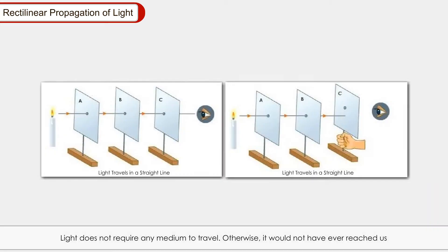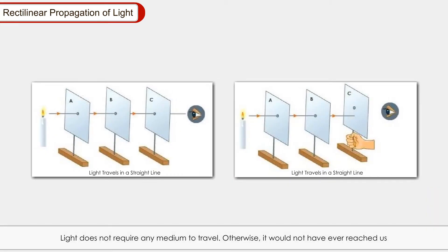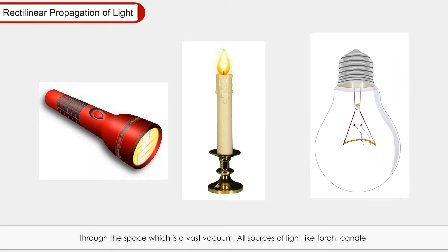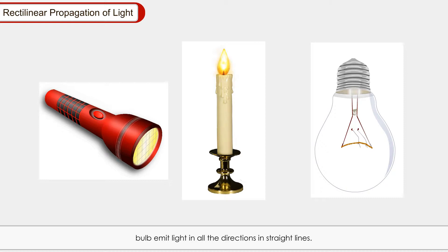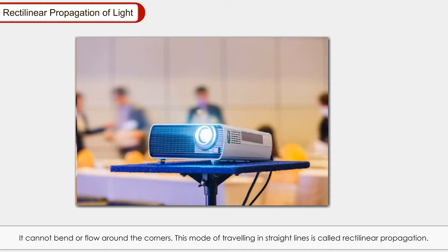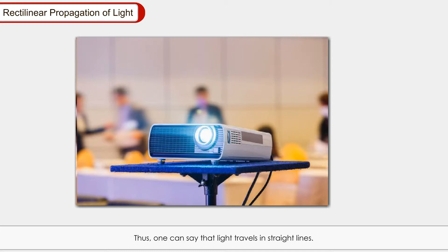Rectilinear propagation of light: Light does not require any medium to travel, otherwise it would not have ever reached us through space, which is a vast vacuum. All sources of light like a torch, candle, and bulb emit light in all directions in straight lines. Light from a projector travels in straight lines in the form of rays towards the screen. It cannot bend or flow around corners. This mode of travelling in straight lines is called rectilinear propagation.